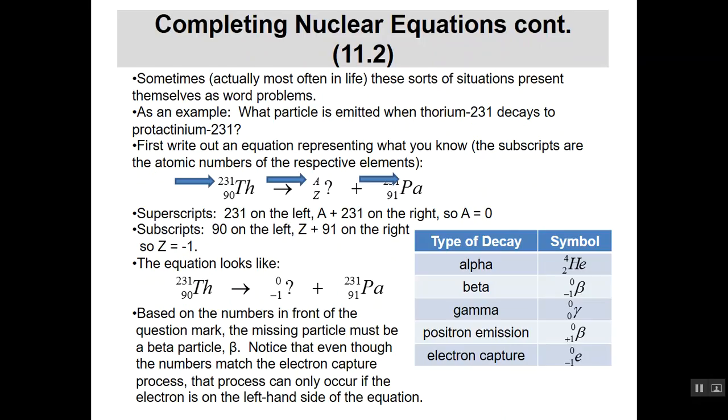If I look at the subscripts now, and I look down below, and I see I have a 90 on the left, and on the right-hand side I covered it up again, 91 for protactinium. So that Z then has to be what? Well, if I want 91 plus something to equal 90, that something has to be a minus one. I'm taking one away from 91, aren't I? And so my missing symbol, my missing particle has a minus one as a subscript, zero as a superscript, and I have my question mark there.